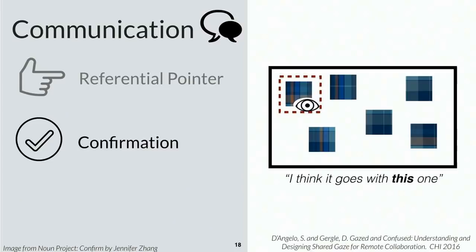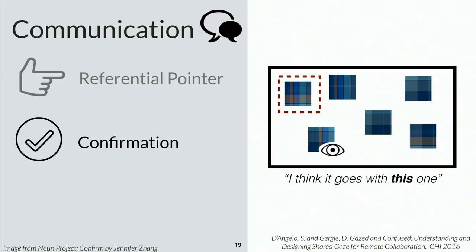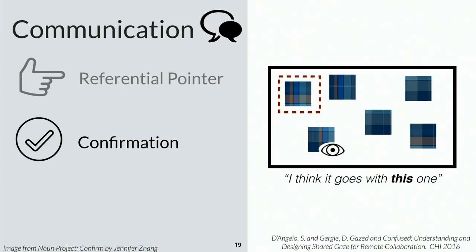The other thing gaze visualizations are useful for is confirmation. If I used my gaze cursor to signal which piece I'm talking about, and I can see from my perspective that you've looked at that piece, that confirms we're on the same page. If you were looking at a different piece, I'd know I had more work to do. These two features — more efficient referential forms and verifying we're on the same page — are really great for facilitating effective collaboration.